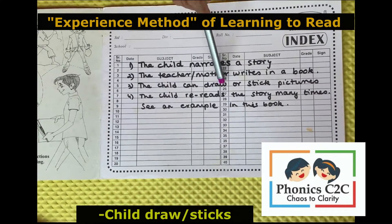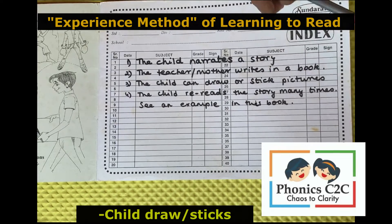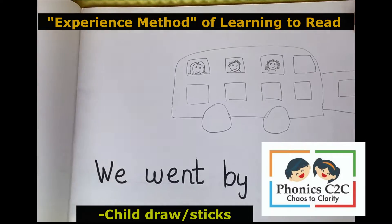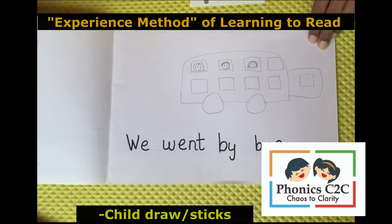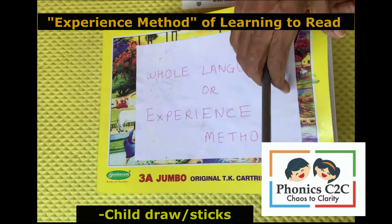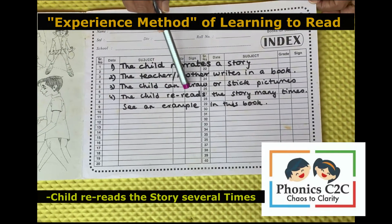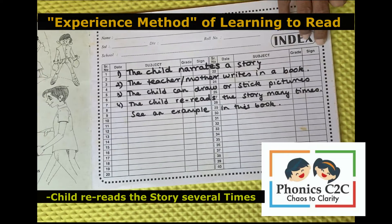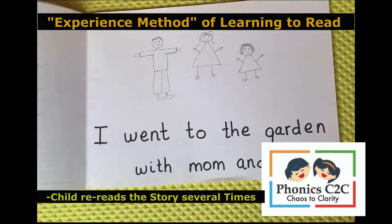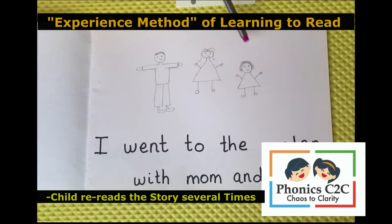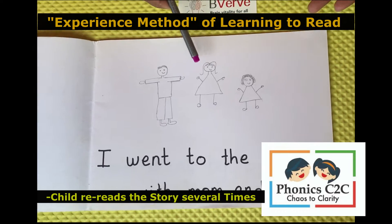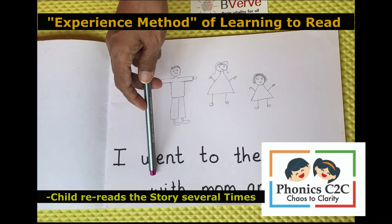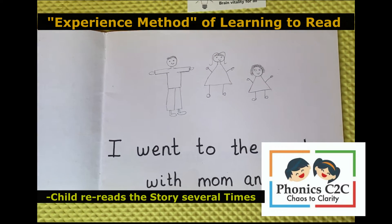Then the child can draw or stick pictures. The child rereads the story many times, and this book becomes their own book because the pictures were drawn by the child and the sentences were given by the child to the teacher.